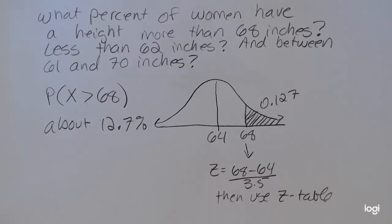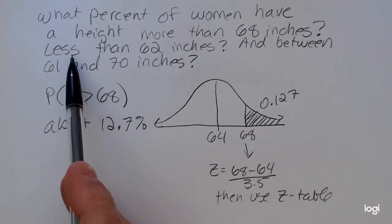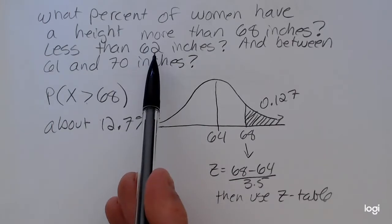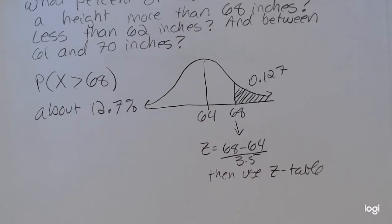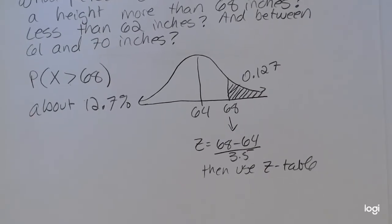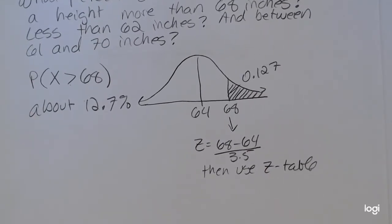For the next part, we want to find the probability that we get a woman less than 62 inches. And that will also give us the percent of the population of women whose height is less than 62 inches. It's essentially the same question.